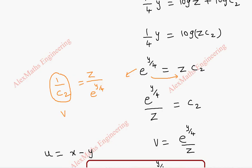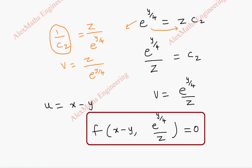So even we can take this as v equals z by e power y by 4. So again using this term here we get the solution in another form. It is a reciprocal. So all the forms are equally valid.